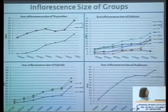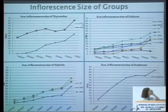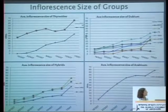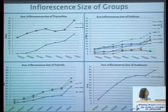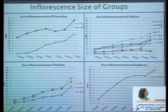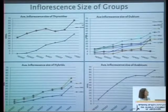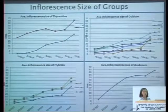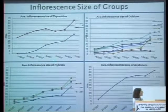We found that the lines with the biggest inflorescences were Tirsoides and Arabicum, with an average of 60 to 70 centimeters. The Dubium group was much smaller in general, reaching a maximum height of about 40 centimeters. In the hybrids, we can see that they reach an intermediate size.